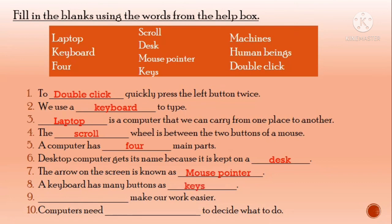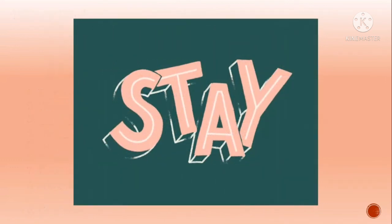Number nine, dash makes our work easier. Who can make our work easier? Our work is made easier by machines. Number ten, computers need dash to decide what to do. Computers need human beings to decide what to do.